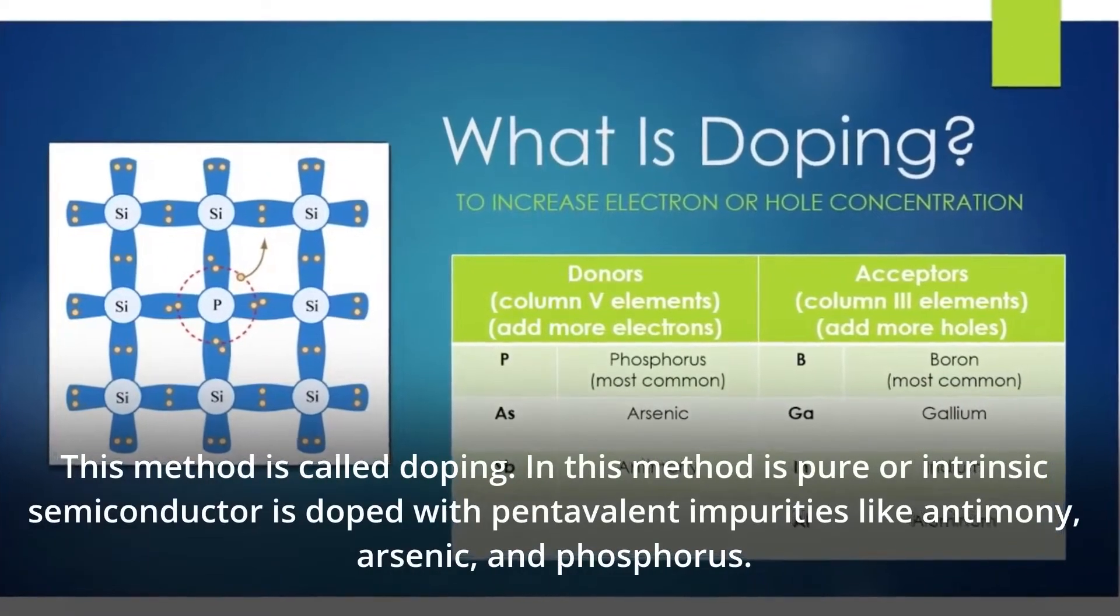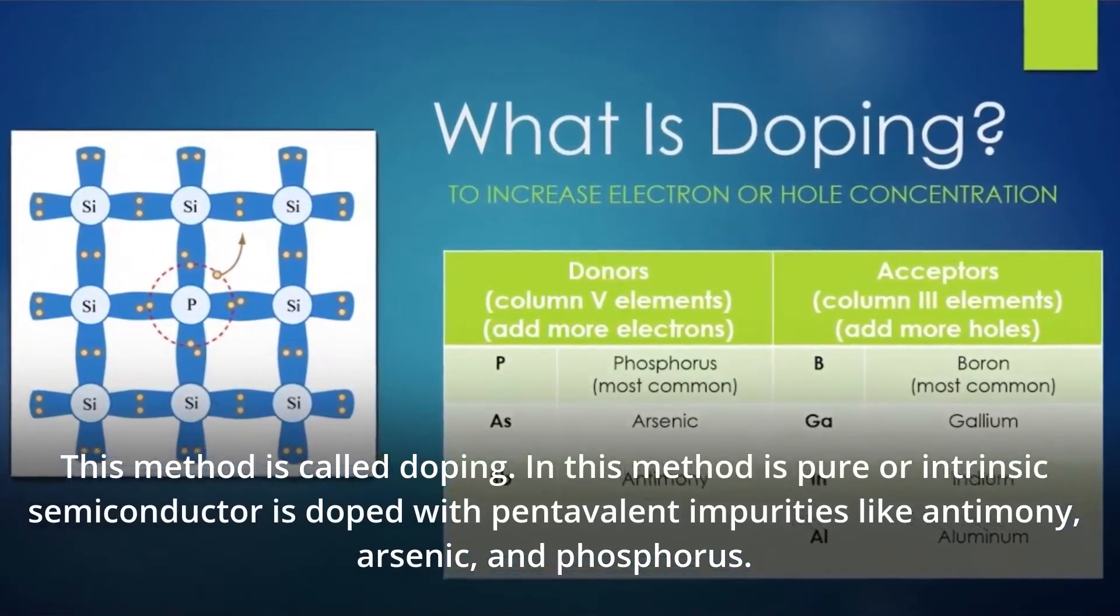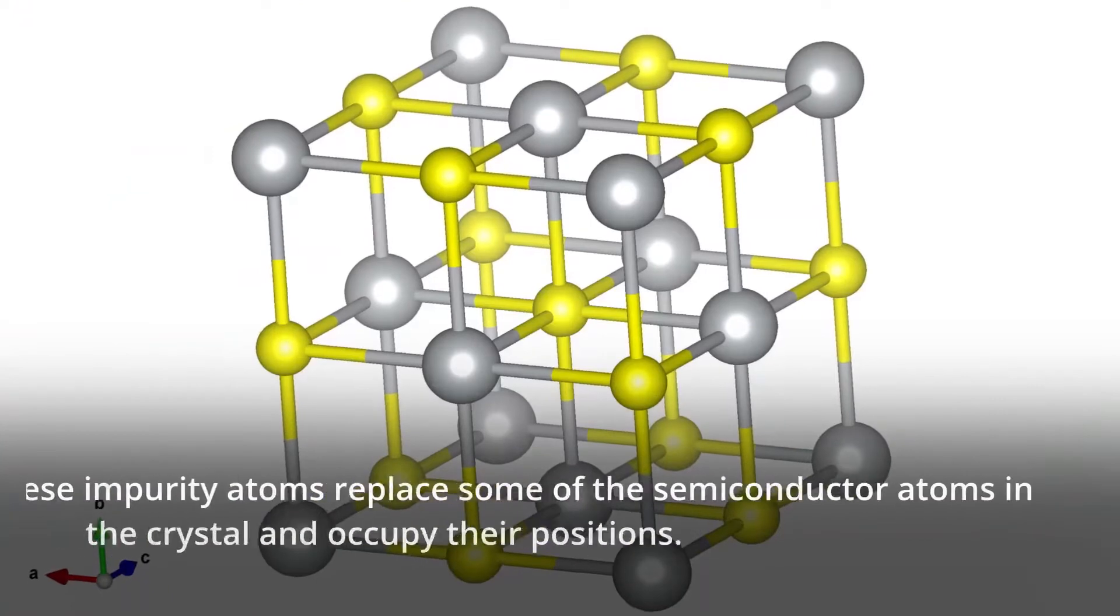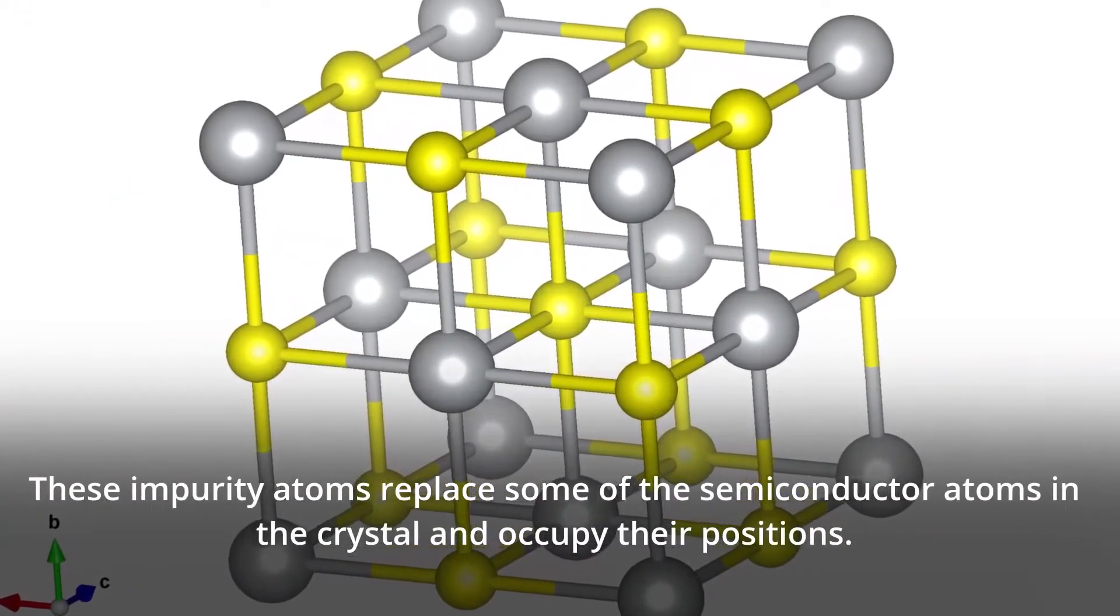In this method, pure or intrinsic semiconductors are doped with pentavalent impurities like antimony, arsenic, and phosphorus. These impurity atoms replace some of the semiconductor atoms in the crystal and occupy their positions.